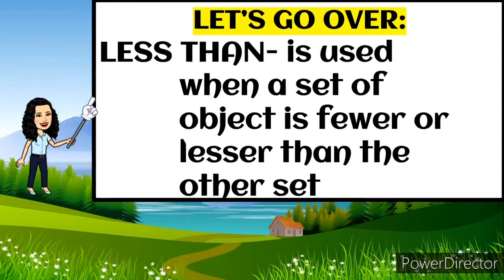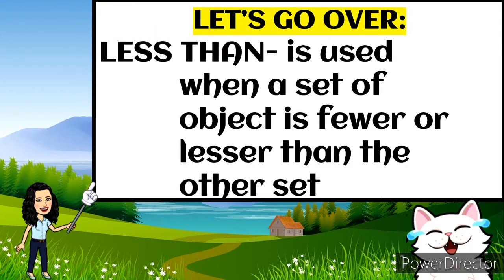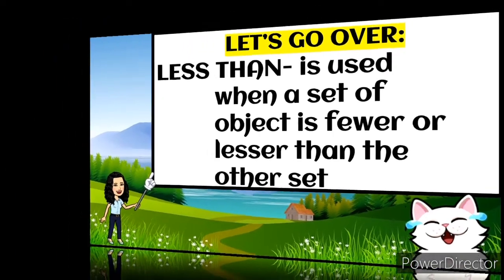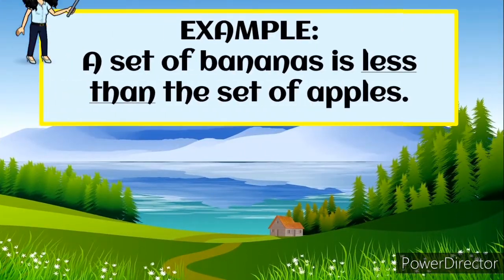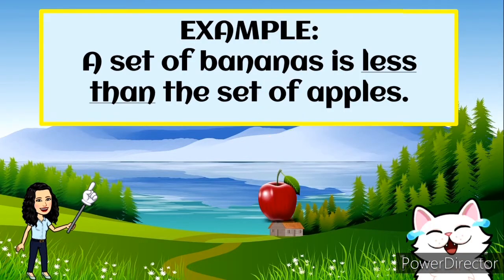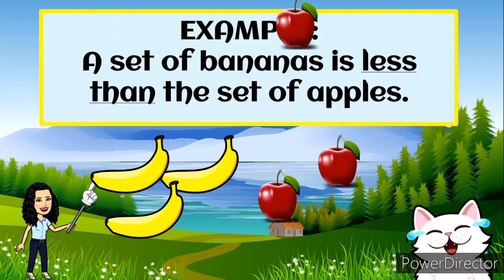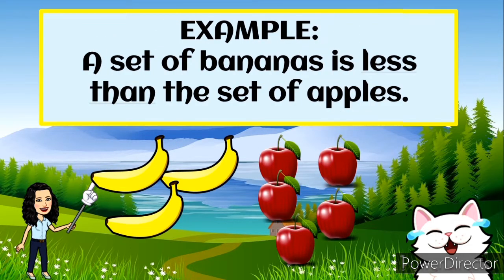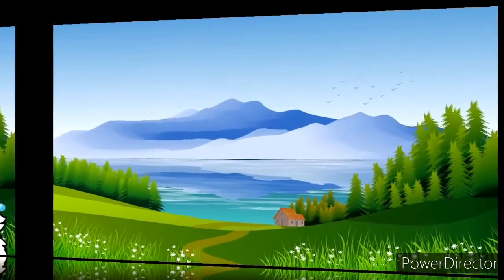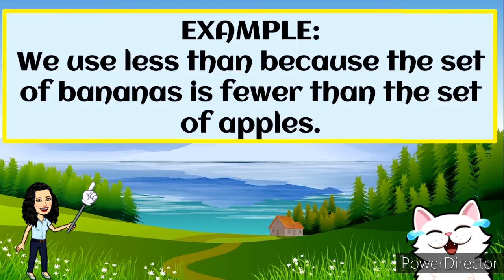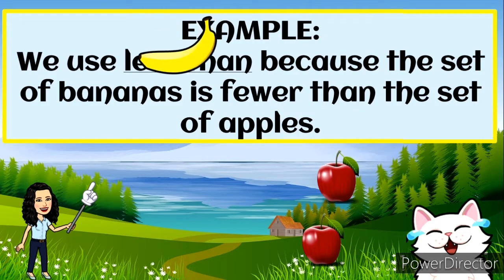Now let's go over the lesson. Less than is used when a set of objects is fewer or lesser than the other set. For example, a set of bananas is less than the set of apples. We use less than because we only have three bananas in set A and in set B we have five apples. We use less than because the set of bananas is fewer than the set of apples.